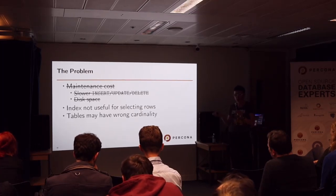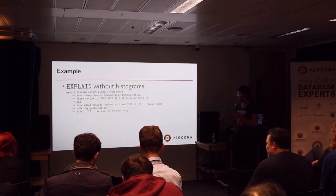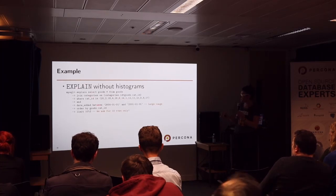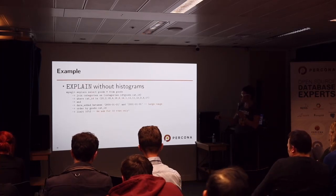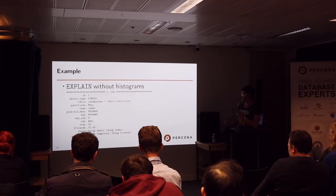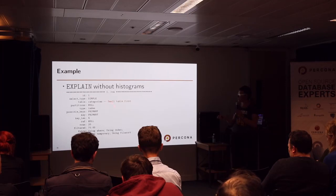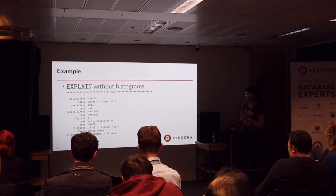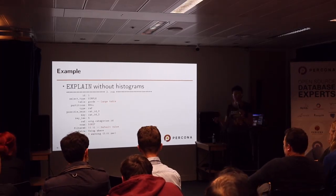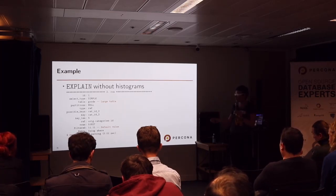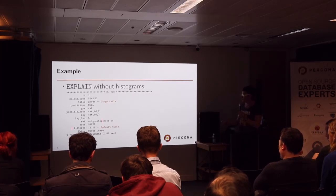A table may have wrong cardinality just because it's been in use for a long time. In our example, let's check the EXPLAIN. We're asking for a large range — one year — and we're asking for only 10 rows. The optimizer by default selects from the 'categories' table first, which is the small table — a very naive approach. Then it selects from the large table. Pay attention to the 'filtered' field: it shows how many rows were filtered from retrieved results. We're retrieving 100 rows but the optimizer expects only 11% to be used.